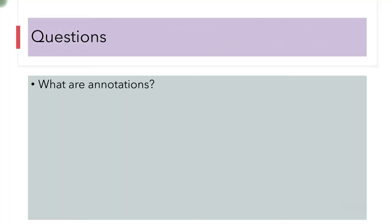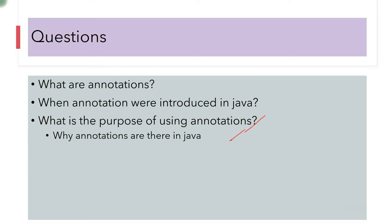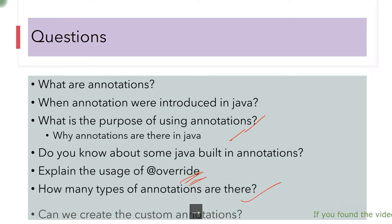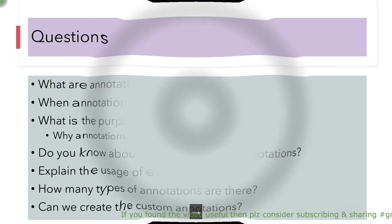So these are the questions that we asked. What are annotations? Now you know about this. When annotations were introduced in Java? And what is the purpose of using annotations? We can answer that they are metadata, additional information wherever you are using it. Do you know about some Java built-in annotations? Yes, they are override, suppress warning and deprecated. Explain the uses of override annotations and how many types of annotations are there? And can we create custom annotations? So all these answers we have seen in the previous videos.